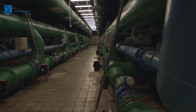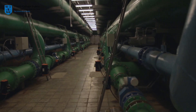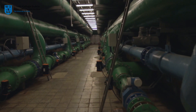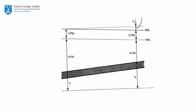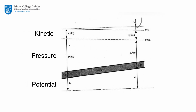Energy in pipe flow is expressed in terms of head and is defined by the Bernoulli equation. The flow in pipes is a function of its potential, kinetic, and pressure energy, minus the energy lost along its length.